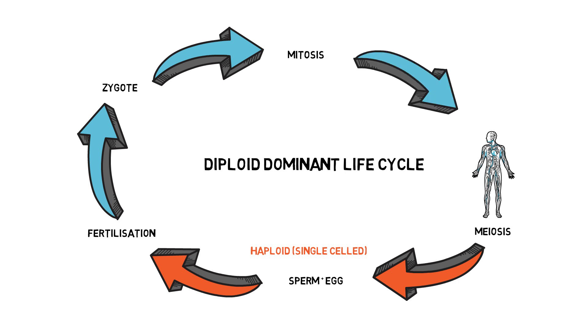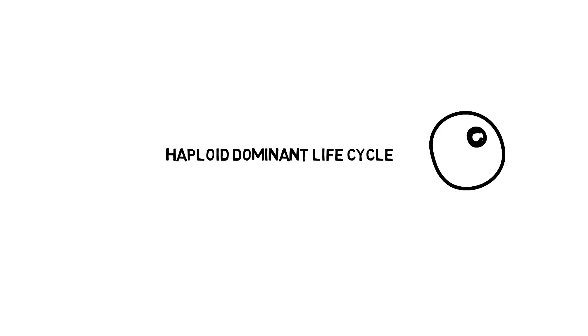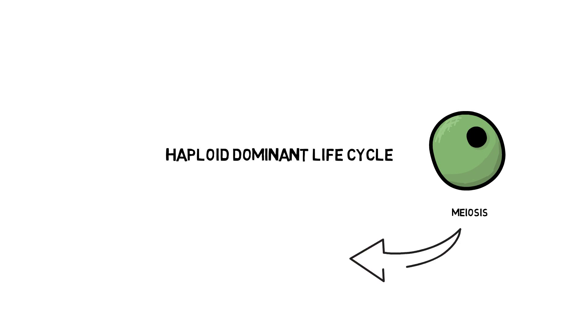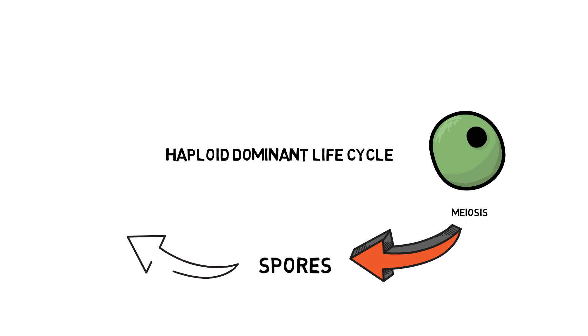I'm now going to discuss two slightly trickier concepts in life cycles. The first is the haploid dominant life cycle, where the multicellular — or sometimes unicellular — part of the organism is haploid, and that's the most obvious stage of the life cycle. In this type of life cycle, the single-cell zygote is the only diploid cell. This is used by fungi and some algae. An example is the black mold you find on bread, whose sexual life cycle uses this kind of format.